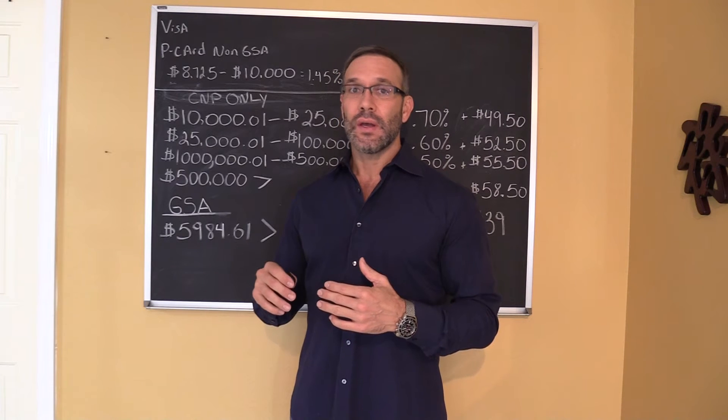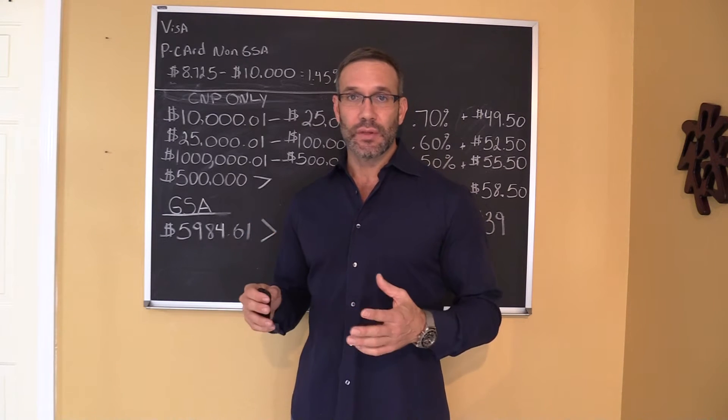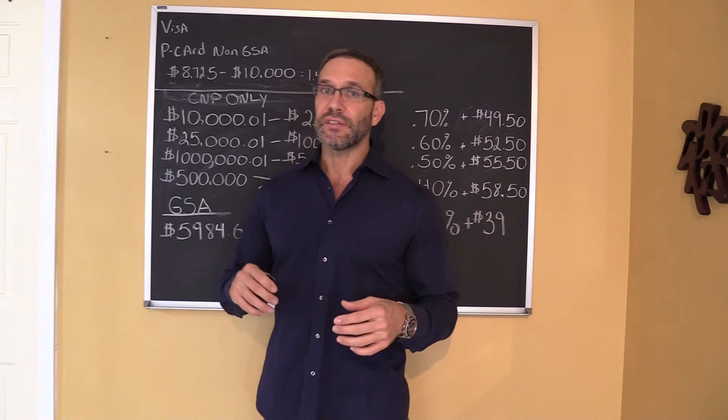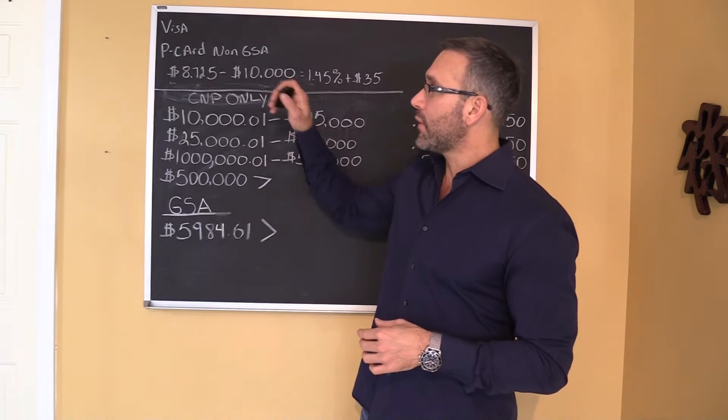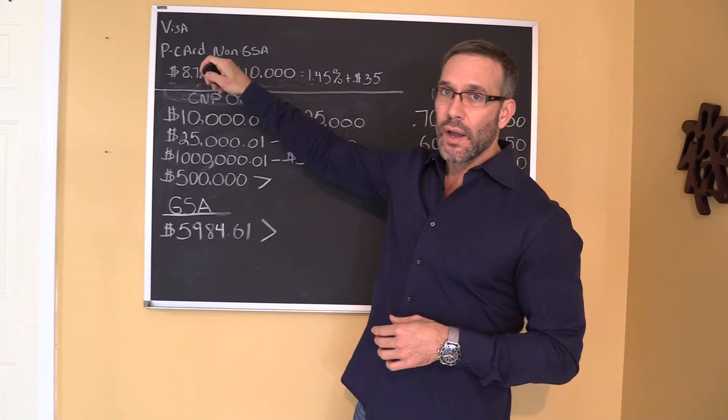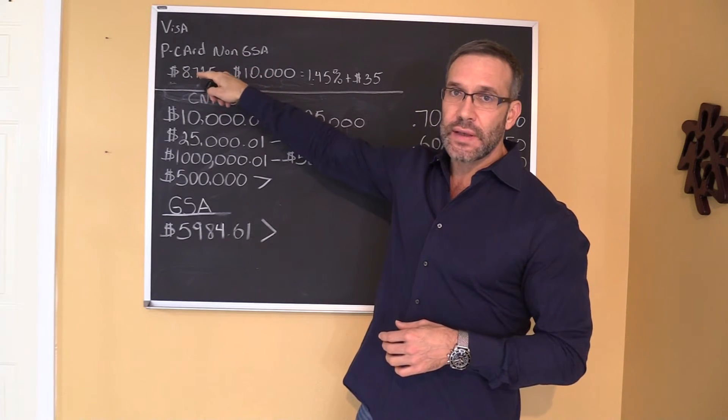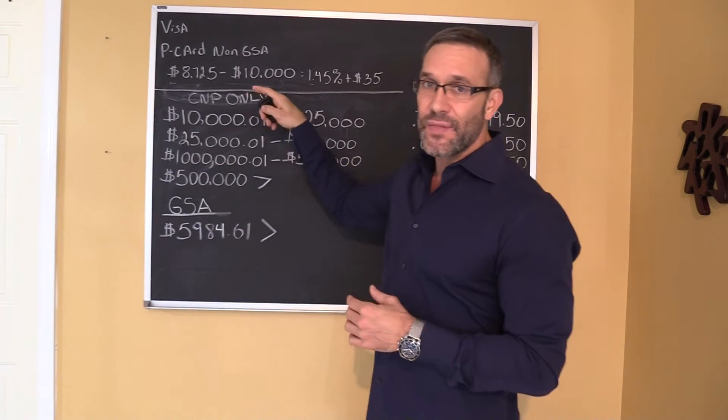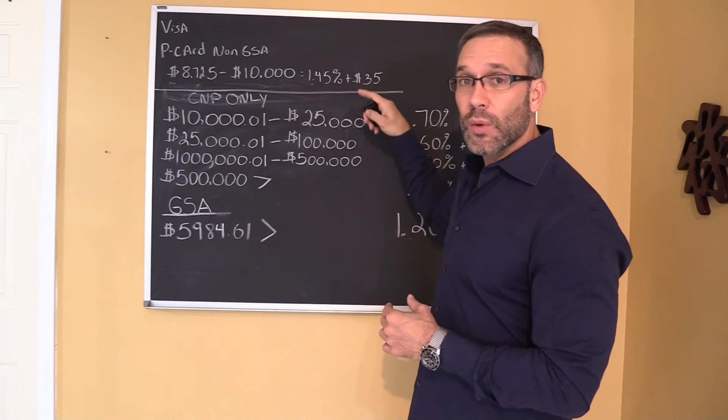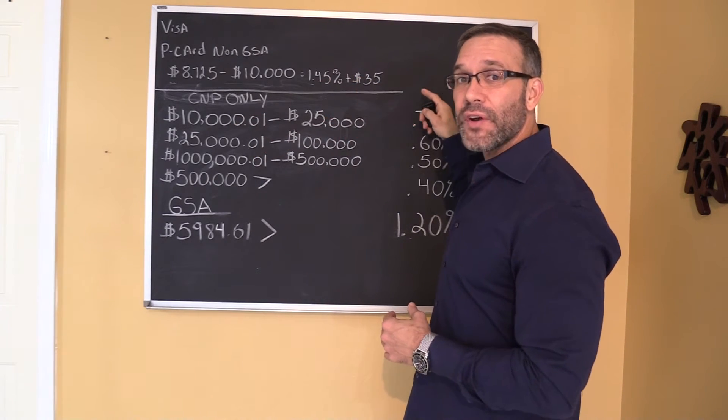Now rates do vary based on the size of the ticket and the type of the card that you're accepting. Let me break this down for you. So first we're going to start with a Visa purchasing non-GSA card. Anything above $8,725 to $10,000 is 1.45% and a flat $35.